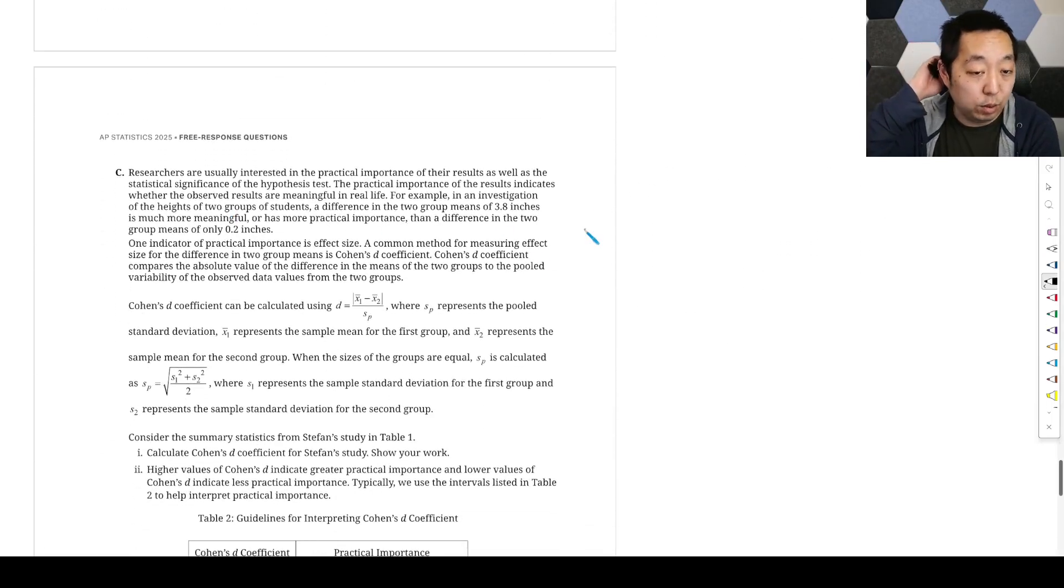Researchers are usually interested in the practical importance of the results as well as the statistical significance of the hypothesis test. The practical importance of the results indicates whether or not the observed results are meaningful in real life. For example, in an investigation of the heights of two groups of children, the difference of the two group means of 3.8 inches is much more meaningful and has more practical importance than the difference of two group means of only 0.2 inches. That's very fair.